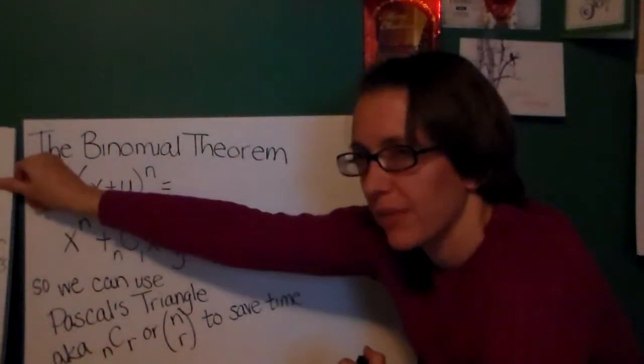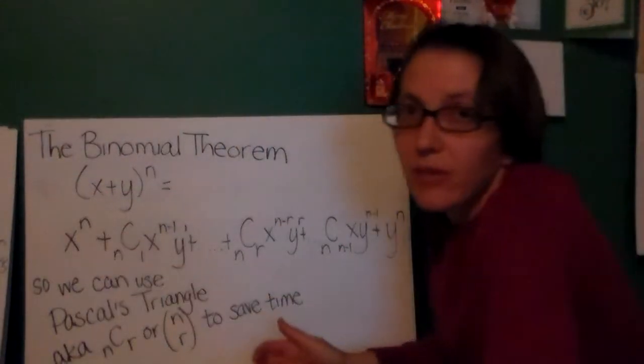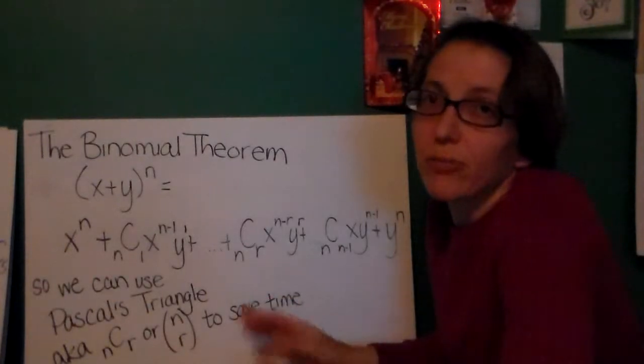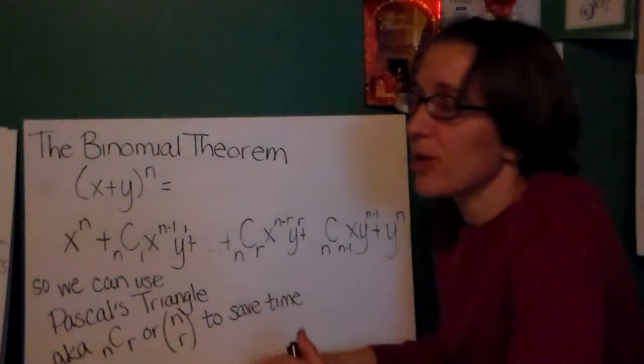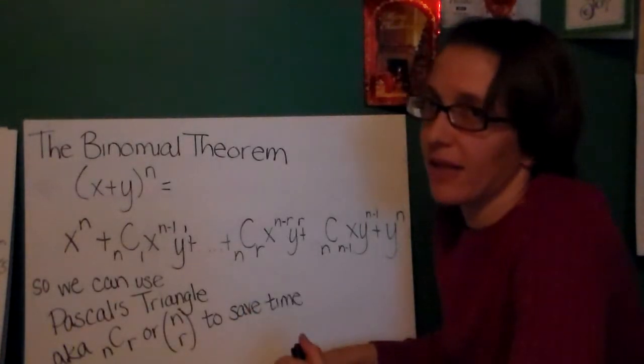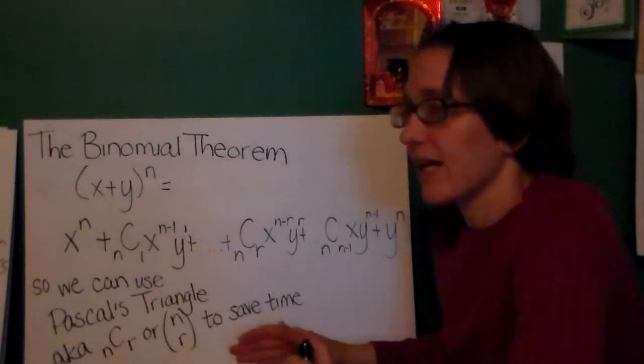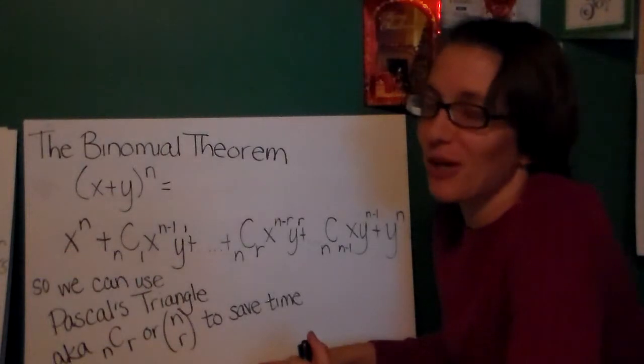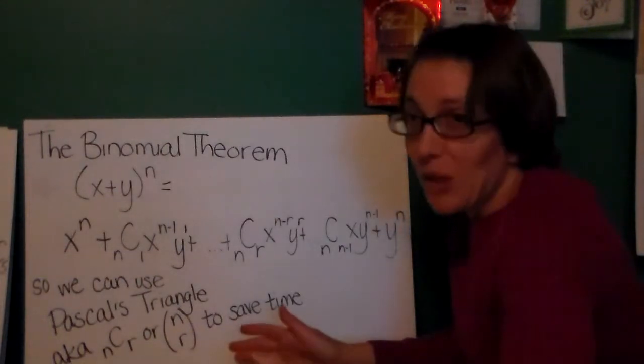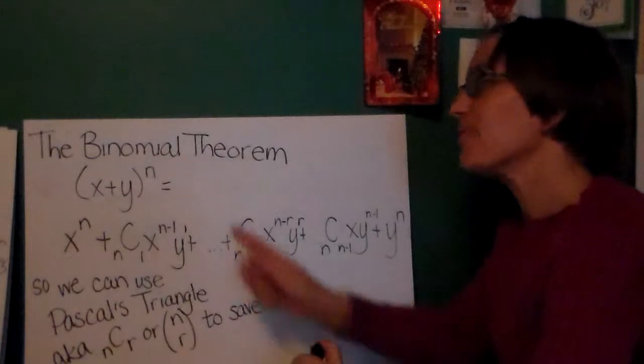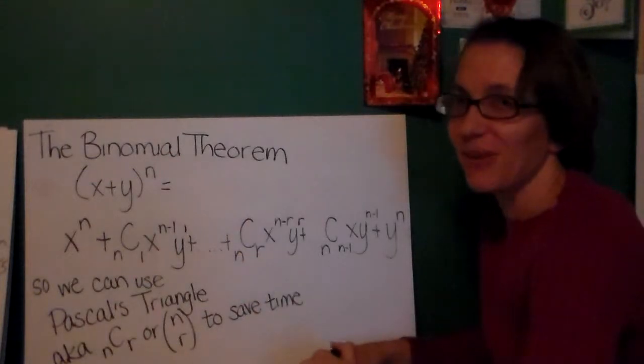So two ways to find it: one through the pattern we saw before with adding, another way using nCr, the binomial coefficient. Okay, so why would we care? Well, I don't know about you, but every day I go to Market Basket, and every day at Market Basket, people are saying to me things like, Mrs. Often, what is x plus y to the nth power? Well, they're not really. But they could, and I would be able to tell them because I know the binomial theorem.